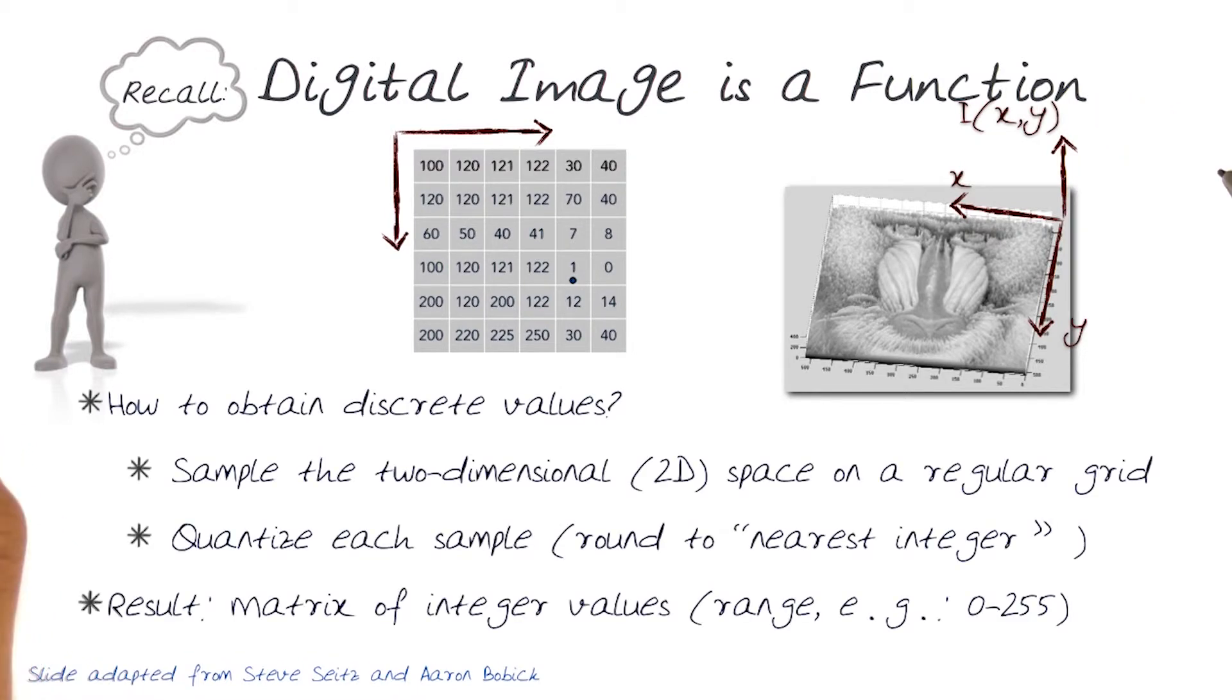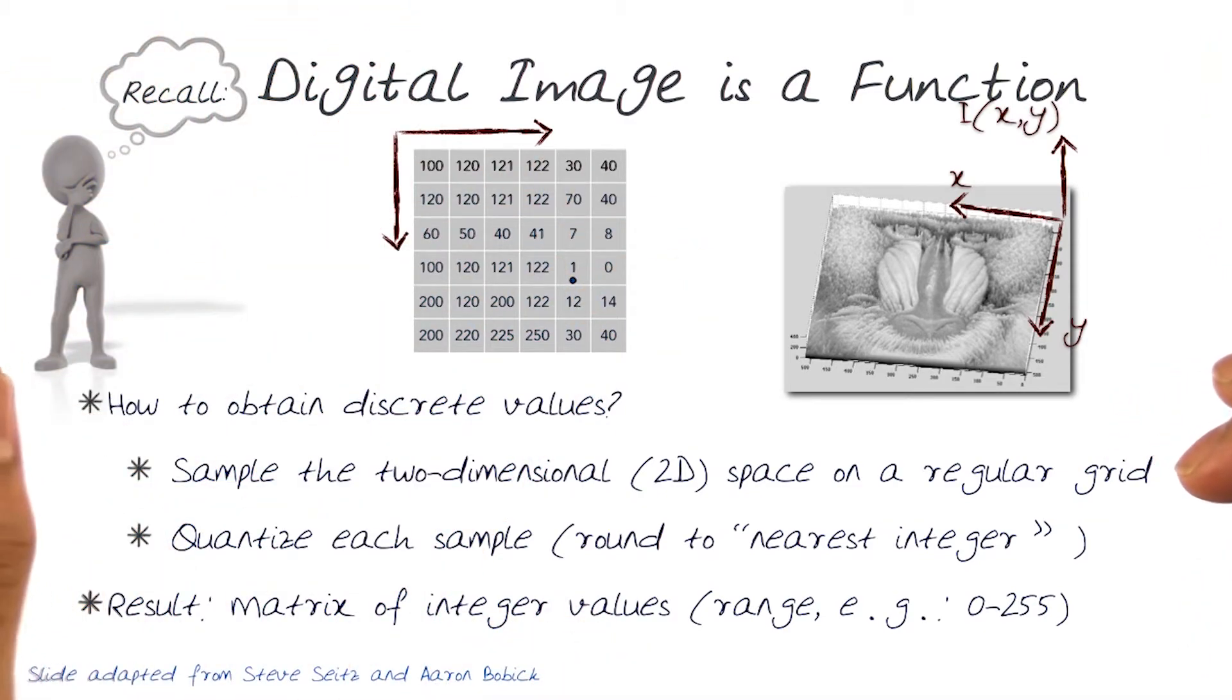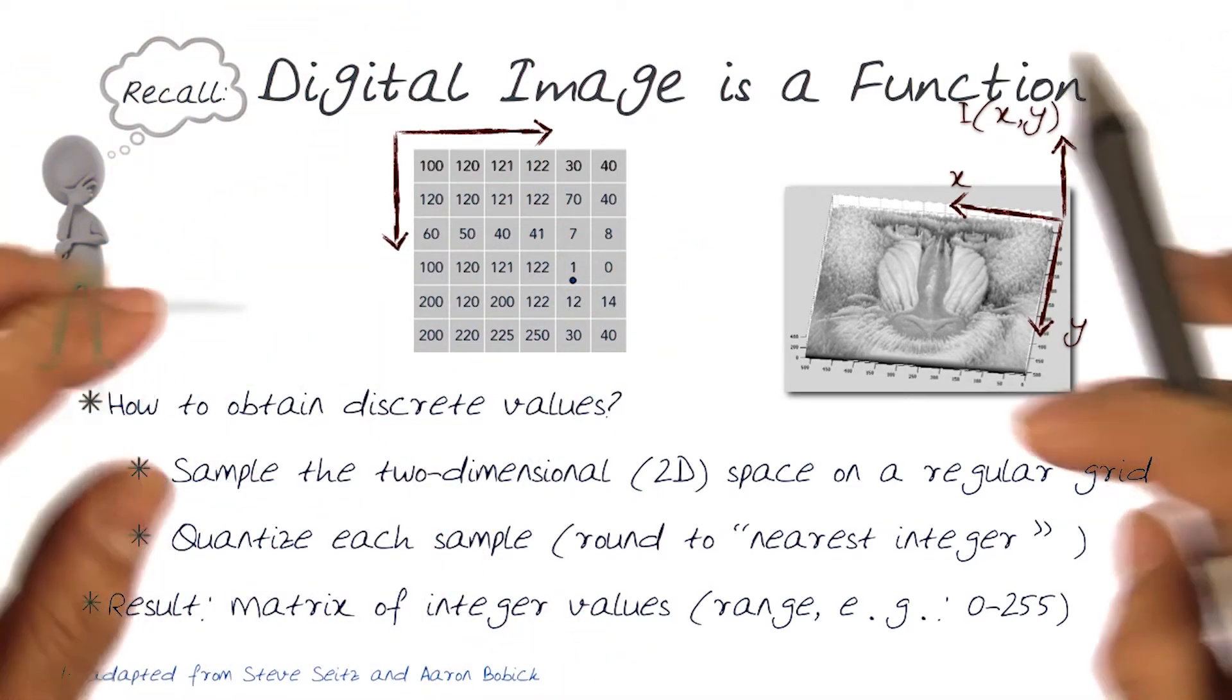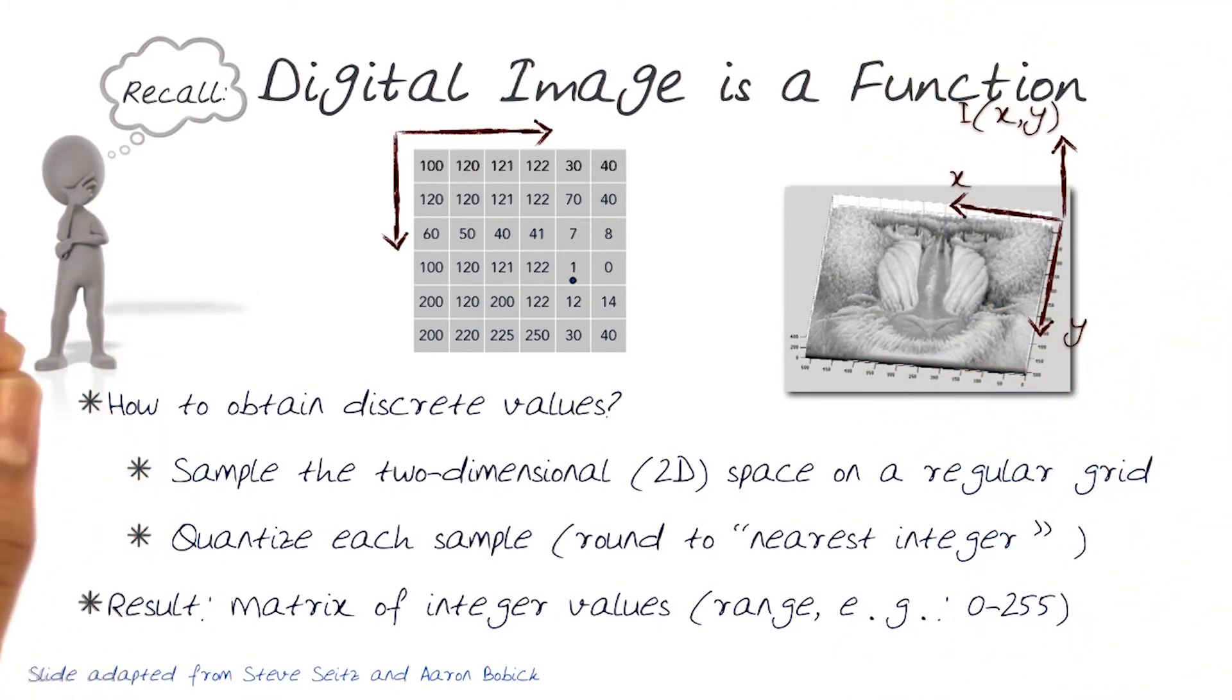So just to review this, what we're trying to do is we're interested in extracting discrete values of an image. So what we want to do is sample the whole image in the two dimensions, in this case, this matrix here, and look for the values of this matrix to be able to then do any kinds of computational processes on.